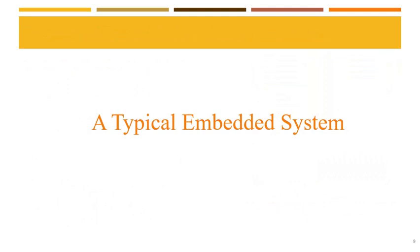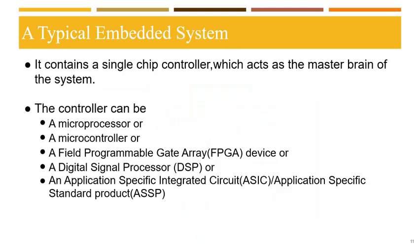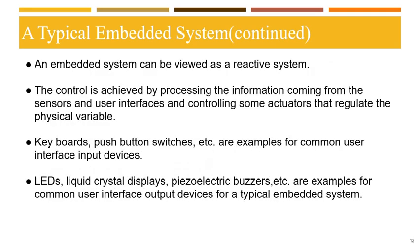Next, we will discuss a typical embedded system. A typical embedded system contains a single chip controller which acts as the master brain of the system. This single chip is connected with input and output ports and is also supported with other supporting integrated circuits and subsystems. The single chip controller can be a microprocessor, microcontroller, FPGA, DSP, ASIC, or ASSP. Embedded systems hardware or software are basically designed to regulate a physical variable or manipulate the state of some devices by sending control signals to the actuators connected to the output ports in response to input signals from end users or sensors connected to input ports.